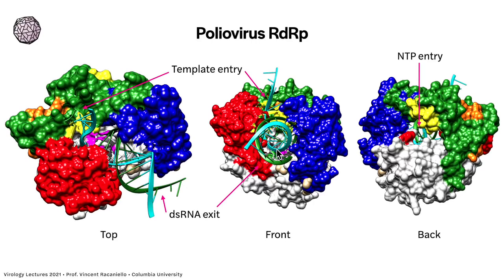There's one more channel for NTPs on the back of this polymerase. All four NTPs go in and out very quickly — there's no selectivity in that sense. They all go in and out randomly, and only when the right one is there — meaning it's complementary to what's next on the template — does it stay inside.